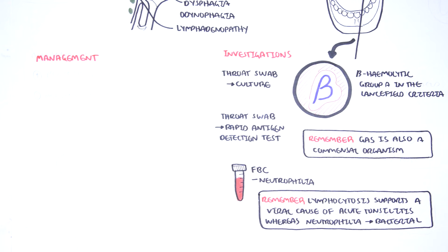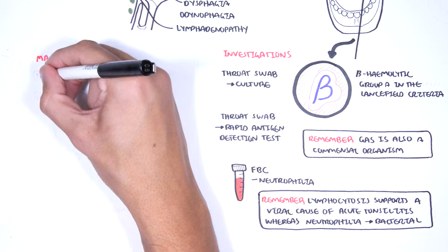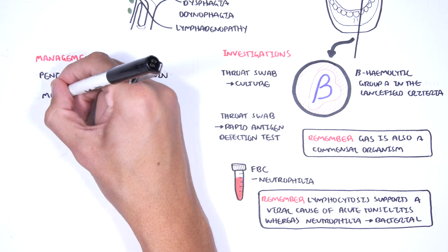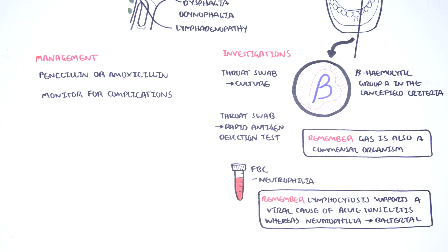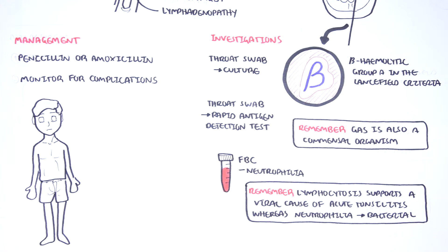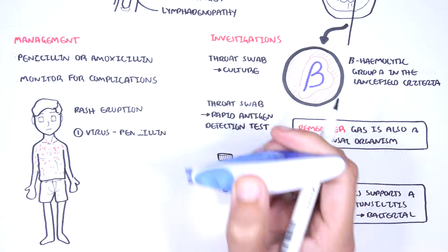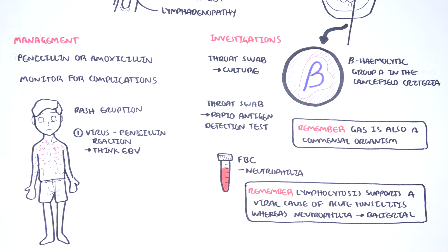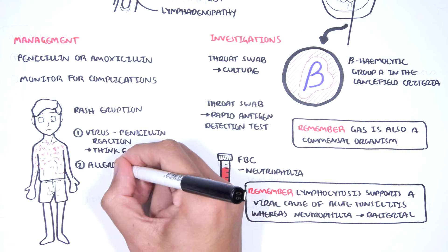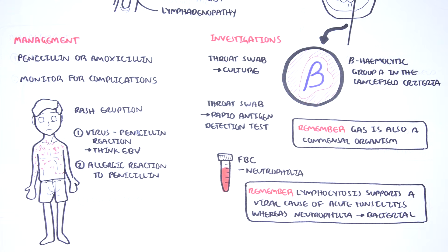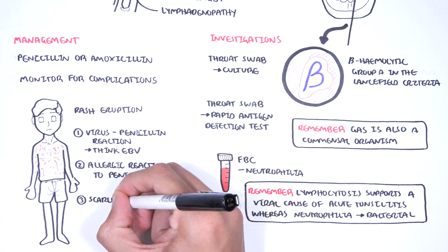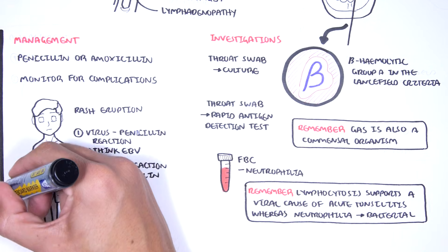Early recognition and management is important to reduce complications associated with Group A Streptococcus throat infection. The management for Streptococcus throat infection are antibiotics, specifically penicillin or amoxicillin. It's also important to monitor for complications of the antibiotics themselves. When you give someone antibiotics with acute tonsillitis, firstly, if a rash eruption occurs, ask yourself, could this be a virus-penicillin reaction, which will support a diagnosis of Epstein-Barr virus tonsillitis rather than a bacterial tonsillitis, in which case you have to stop the antibiotics? The second thing to think about is whether this could be a proper allergic reaction to the antibiotic, in which case you would have to stop the antibiotic and change it, potentially. The third thing is you have to ask yourself, could this be a complication of Group A Streptococcus, which is scarlet fever? There, they also get a rash everywhere.